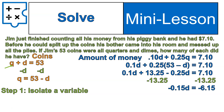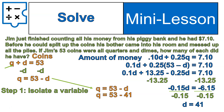What I end up with is negative 0.15d equals negative 6.15. You might notice there are decimals and negatives — but the next step gets rid of all that. Dividing both sides by negative 0.15 gives us d equals positive 41. With all those decimals and negatives, we still end up with a nice clean whole number. There are 41 dimes. Quick subtraction tells us there are 12 quarters. 12 quarters and 41 dimes equals 53 total coins, and they add up to $7.10.